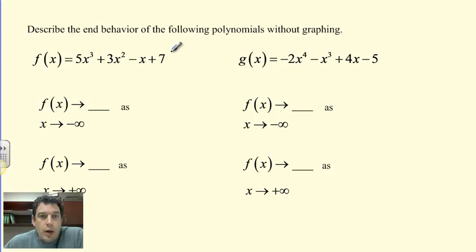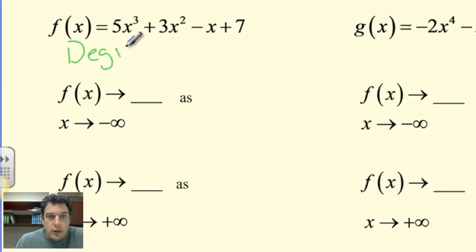So here's a couple example problems. f of x equals 5x to the third plus 3x squared minus x plus 7. The first two things we want to identify are, one, what's the degree, and what's the leading coefficient? In this case, the degree is 3, because that's the highest exponent. So we're going to say degree 3, we're going to say leading coefficient of 5, which is positive.